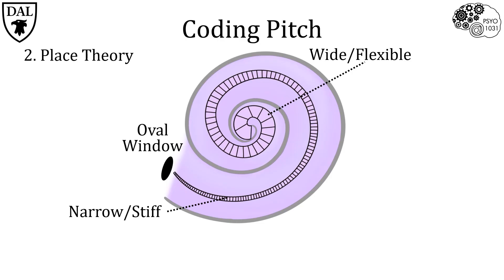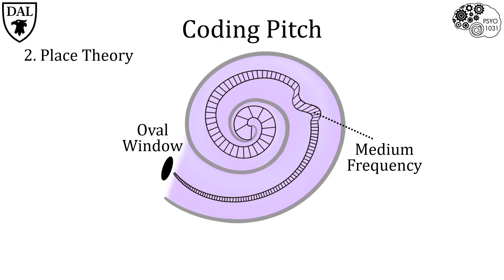High frequency sound waves peak near the oval window. Low frequency sound waves will peak furthest away from the oval window at the center of the cochlea spiral. And medium frequency sound waves peak closer to the middle of the cochlea. Thus, the cochlea can discriminate between different sound wave frequencies depending on where they induce peak movement in the basilar membrane.